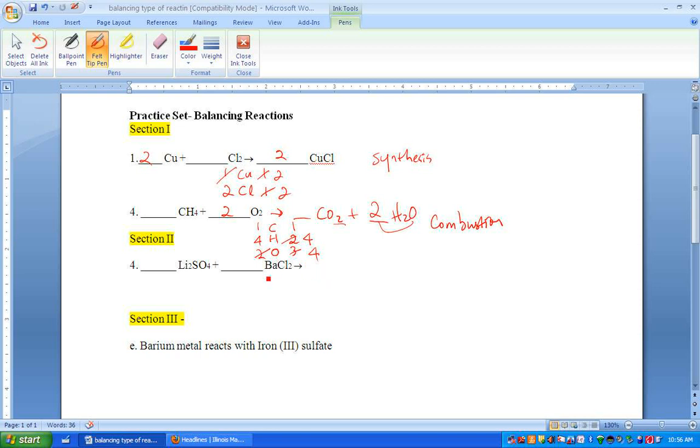So section two is actually a little bit more difficult than section one because they don't give you the product and you have to come up with the product first. So it involves one extra step.